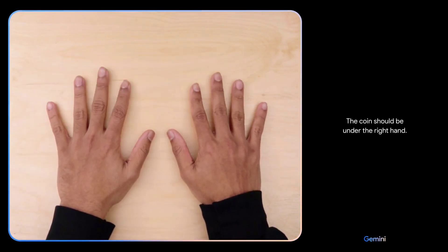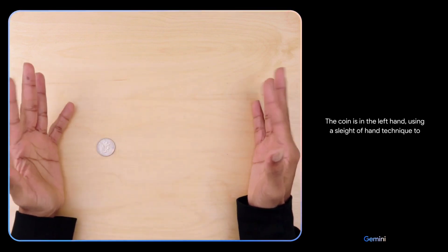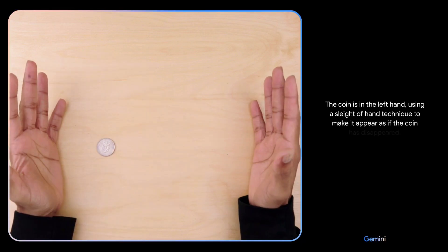The coin should be under the right hand. I don't know. The coin is in the left hand using a sleight of hand technique to make it appear as if the coin has disappeared.